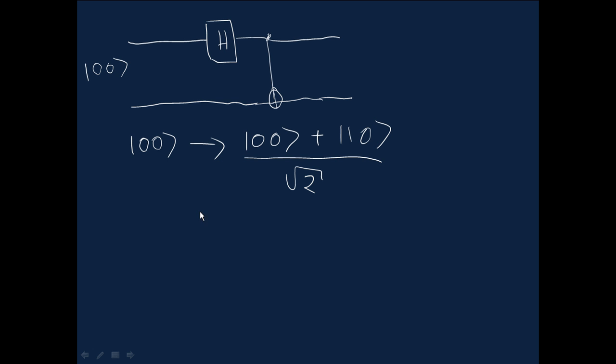Now we apply the CNOT gate. Well, the |00⟩ isn't changed at all, but the |10⟩ is changed to |11⟩ because the CNOT qubit is set.